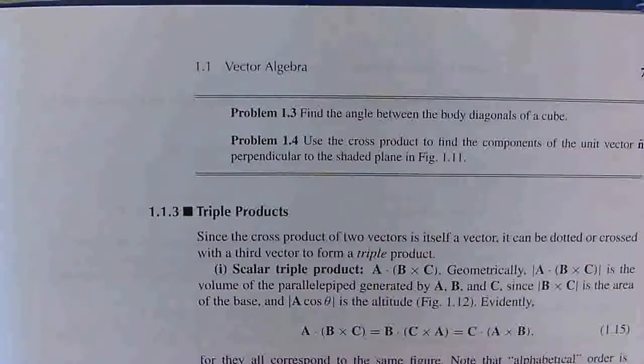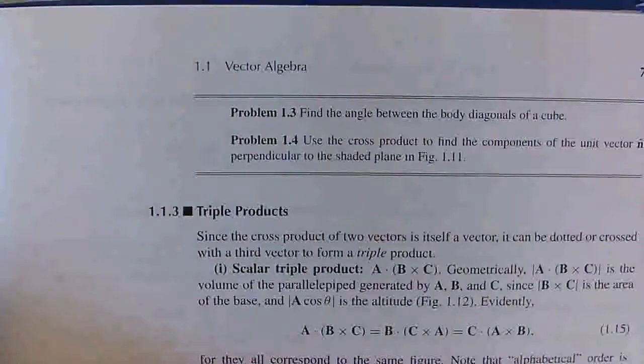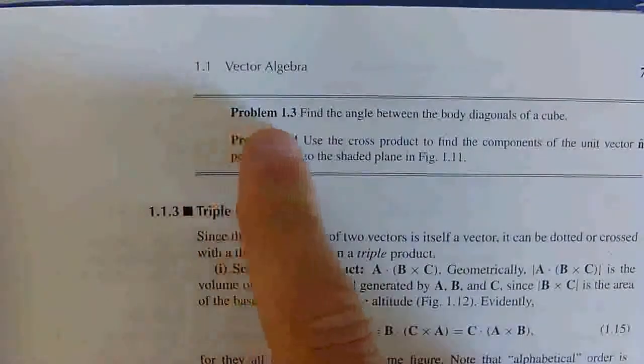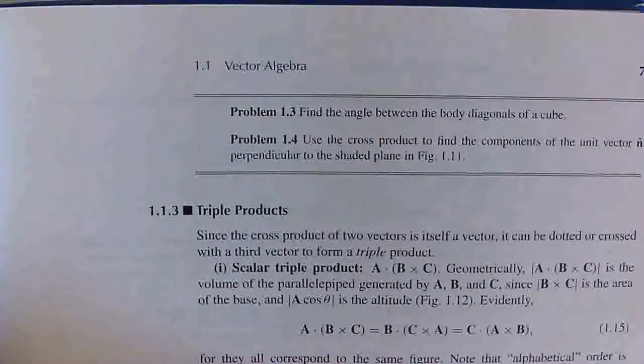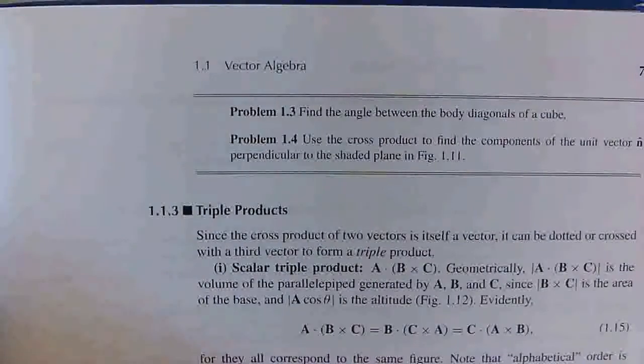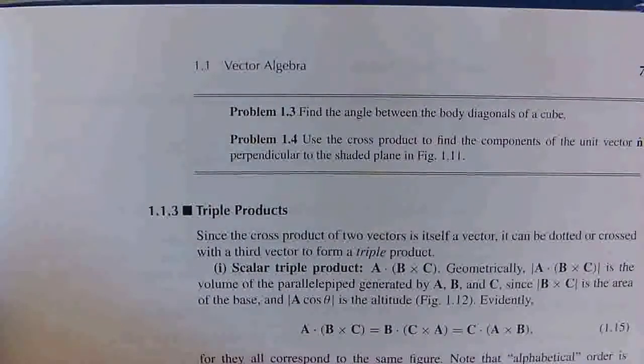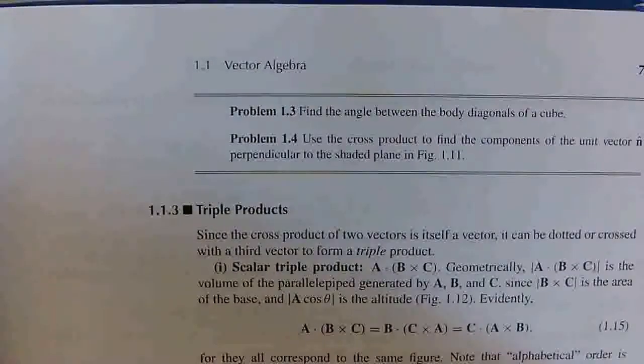Hello everyone, welcome back to the channel. Today we'll be working through problem 1.3 of Griffith's Introduction to Electrodynamics. It says, find the angle between the body diagonals of a cube.